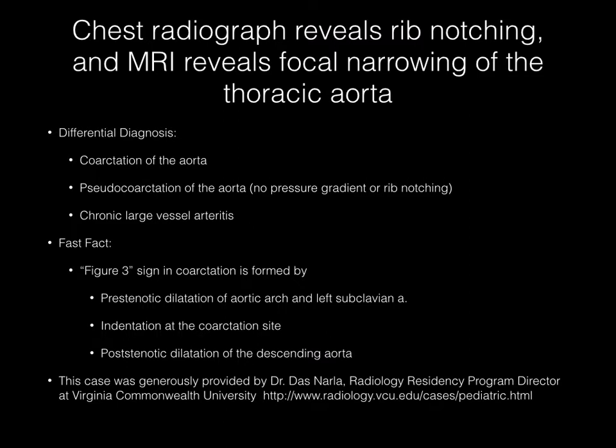The chest radiograph reveals rib notching, and the MR image reveals focal narrowing of the thoracic aorta. Regarding differential diagnosis, most likely is coarctation of the aorta. You could mention pseudocoarctation of the aorta, although this entity presents with no pressure gradient and there is no rib notching typically. You could also mention chronic large vessel arteritis.